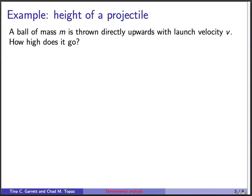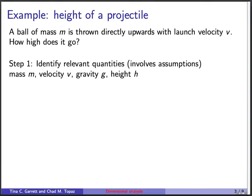So for our first example, we're going to think about the height of a projectile. You have a ball of mass m, you throw it directly up in the air, you get to choose the velocity with which you initially throw it up, and you wonder how high that ball goes. Step one is just to identify the relevant quantities. I want to be clear, this is an assumption, but we're going to guess that what matters is the ball's mass m, the velocity v, gravity g, and the ball's height h.